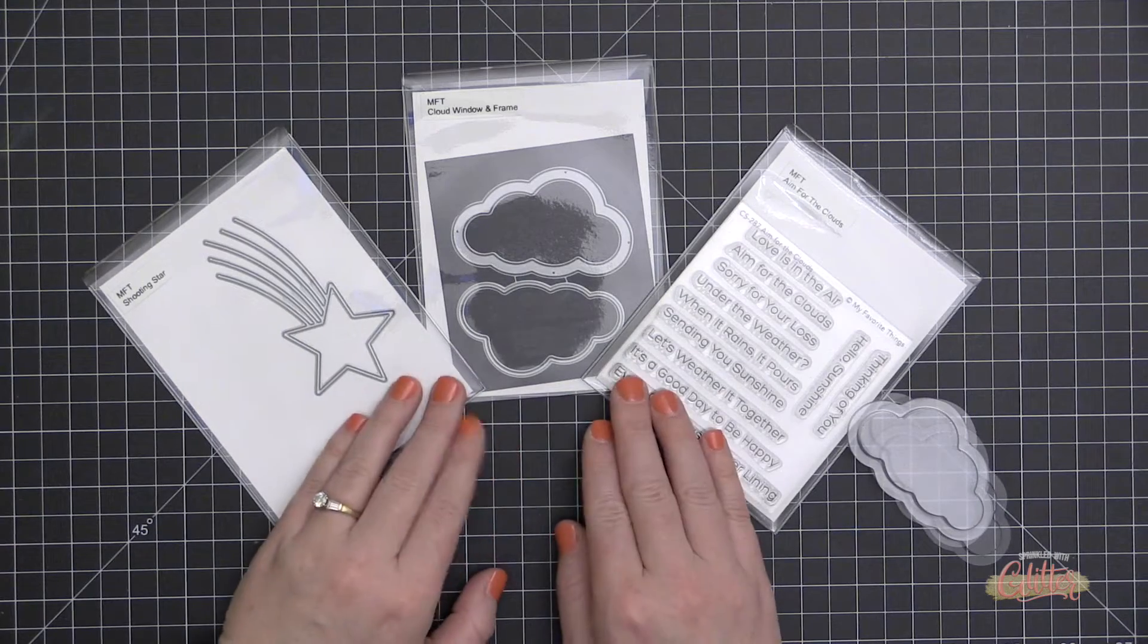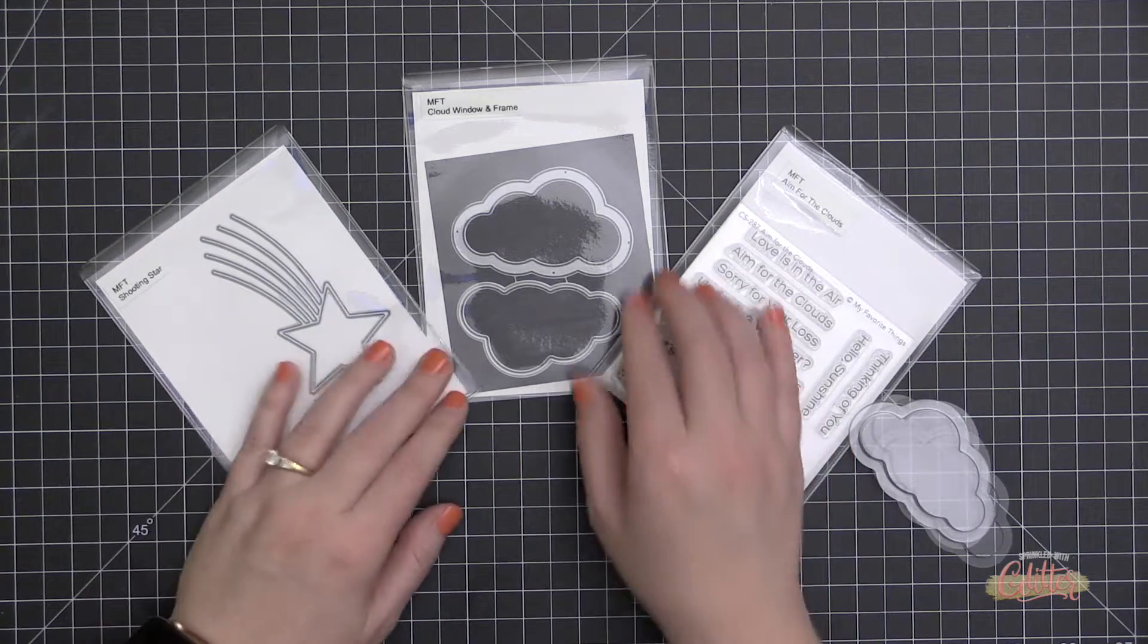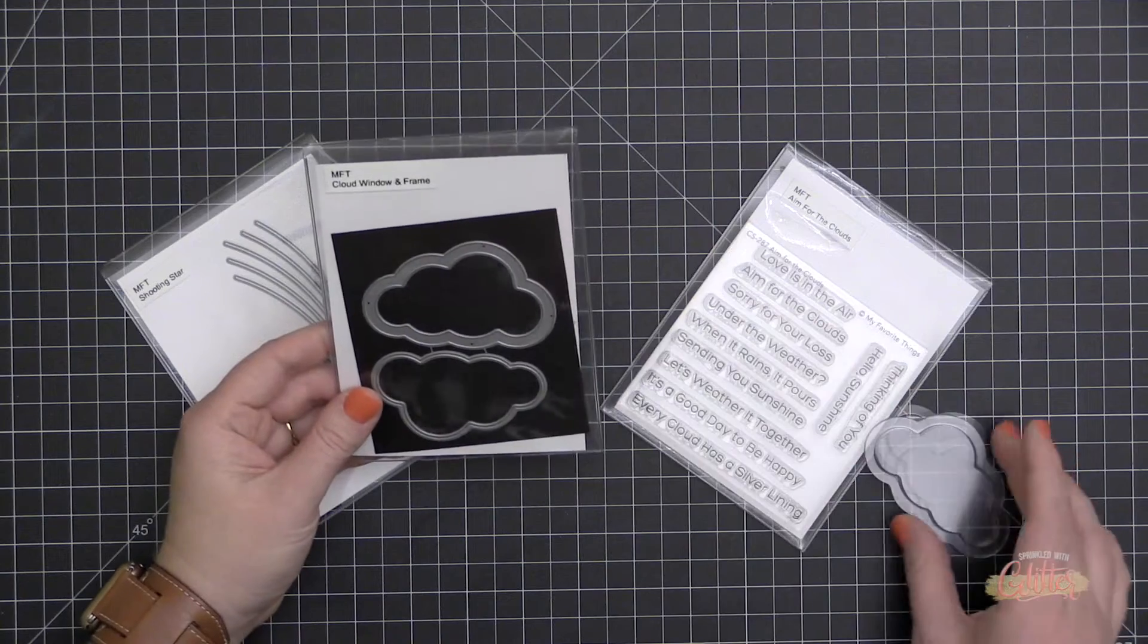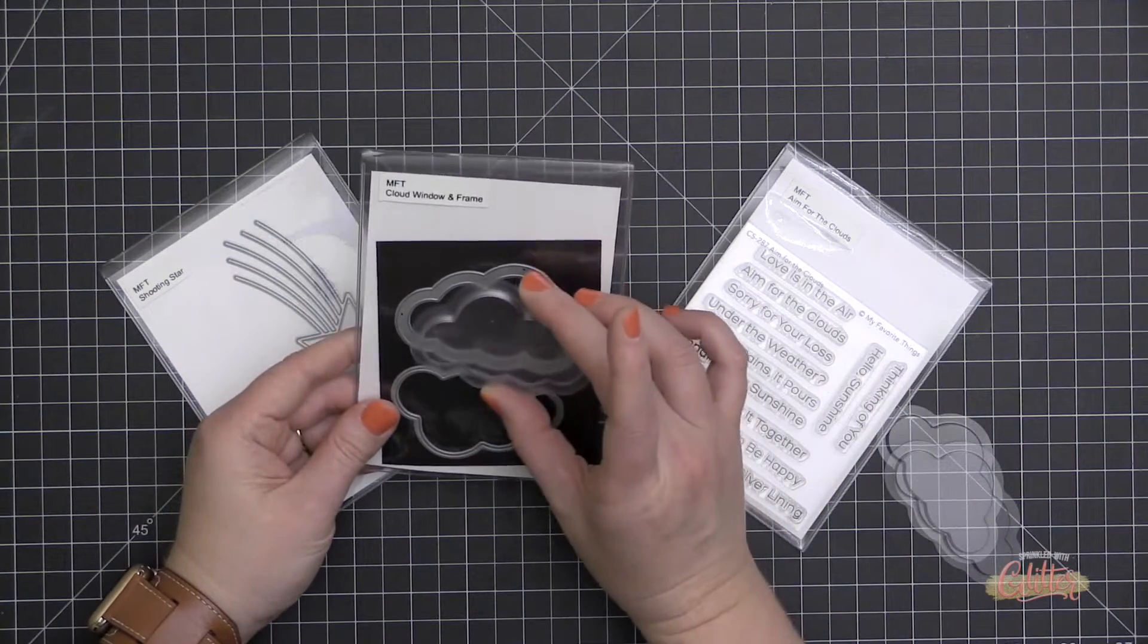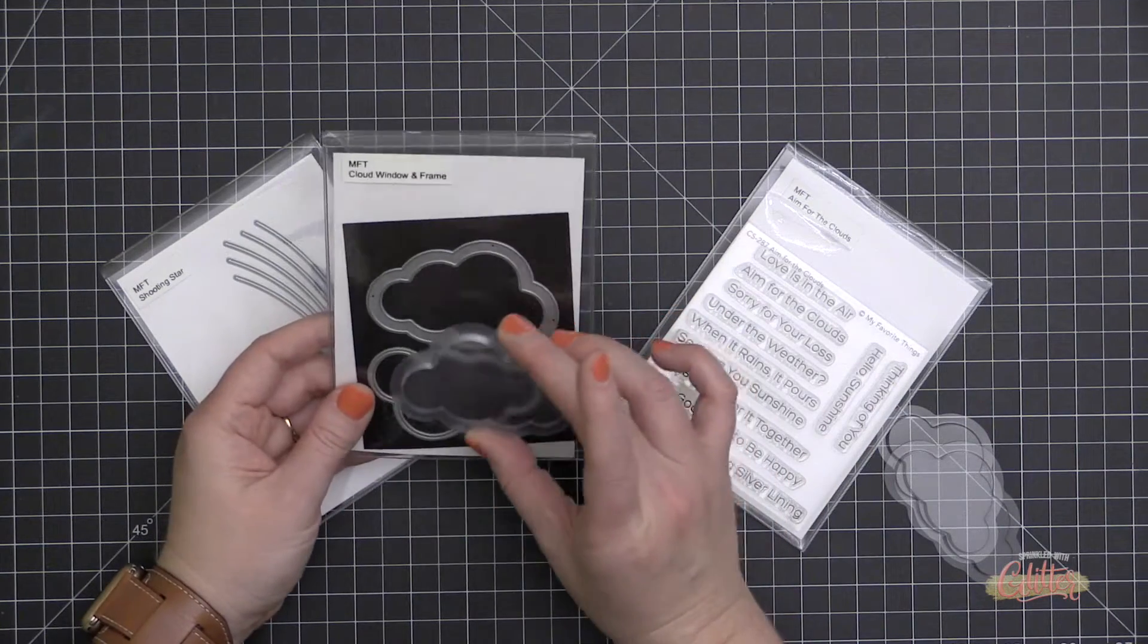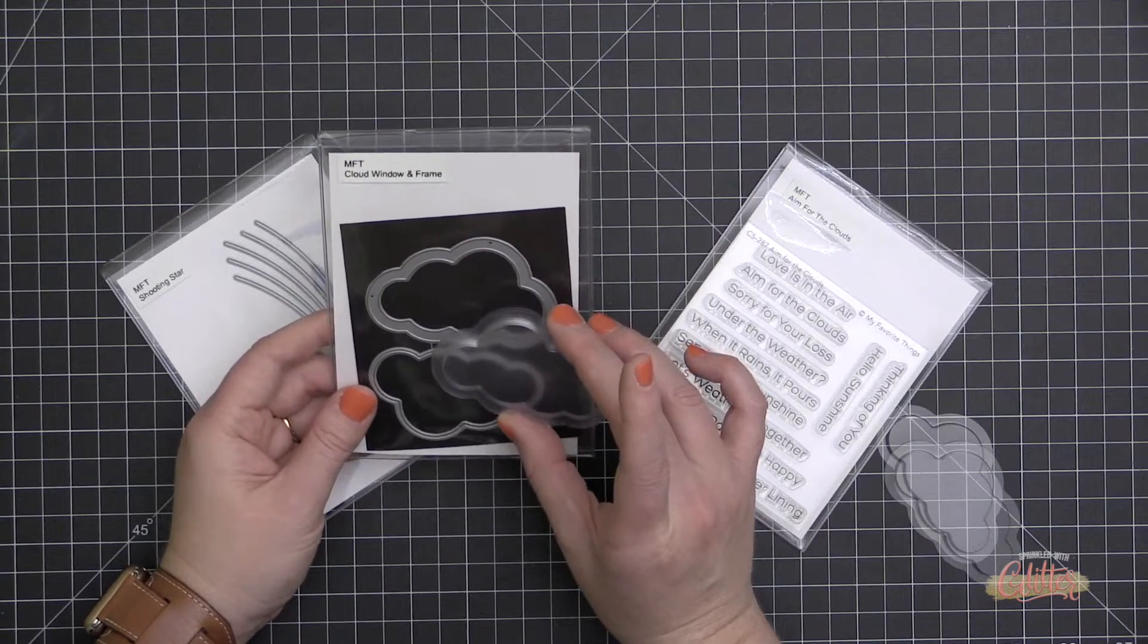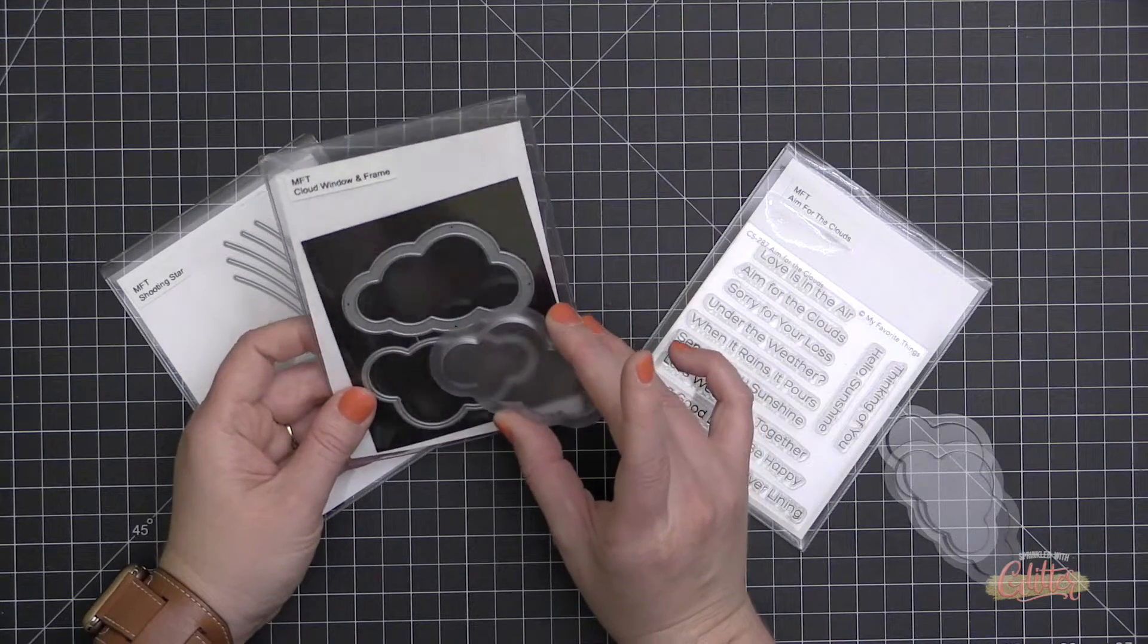These products here are from the April release from My Favorite Things, and I'm going to be using this cloud frame and window die set along with the cloud shaker pouches.